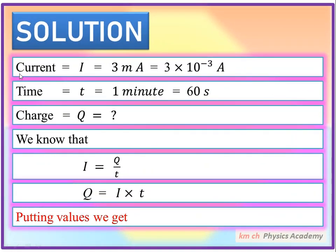The current I is equal to 3 mA. Milli means 10 to the minus 3, so this means 3 into 10 to the minus 3 ampere.